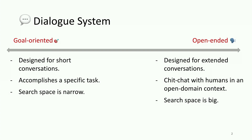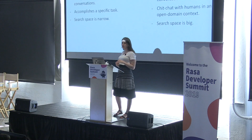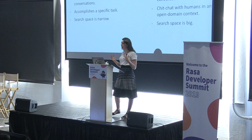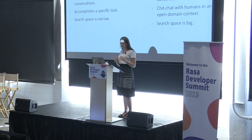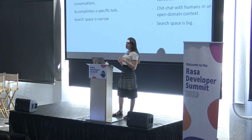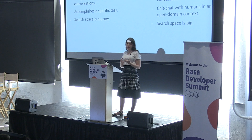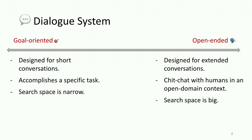For goal-oriented dialogue systems, these models are designed for short conversations and to accomplish a specific task within a limited number of dialogue turns — for example, booking a flight or booking a table in a restaurant. Another characteristic is that the search space is pretty narrow, meaning that the number of possible correct answers is very limited, as we are dealing with a specific domain.